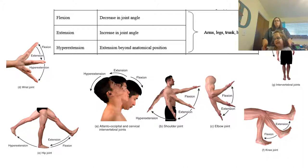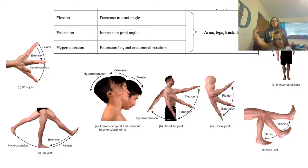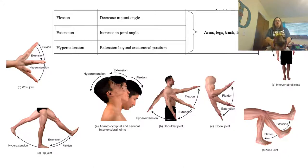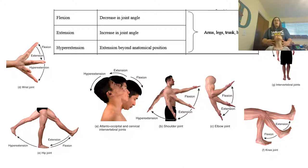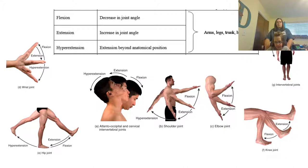Another movement is extension. This is going to be where we increase the angle — it's the opposite of flexion. With the arm, when it's flexed, extension is where we bring it back and put it where it's long again. The same thing with the head — flexion is chin down, and when we look back up, that's extension. Hyperextension would be if we go back even further, like looking up at the ceiling. You can also do hyperextension with your leg, in the sense of your hip.